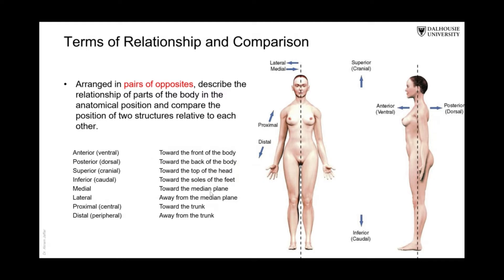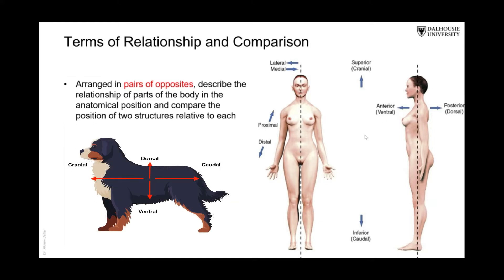These are the terms of relationship and comparison. We have, for example, anterior, which is close to the front of the body — sometimes you use the word ventral. Opposite to it is posterior, or dorsal. These words ventral and dorsal are derived from descriptions of animals.